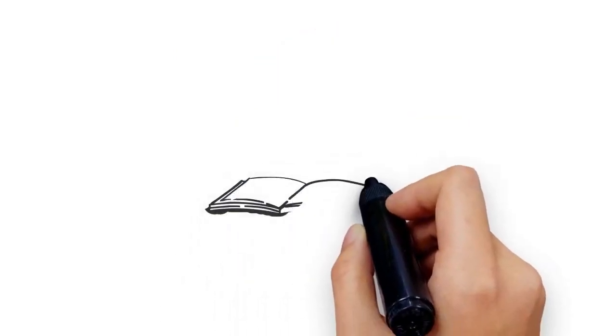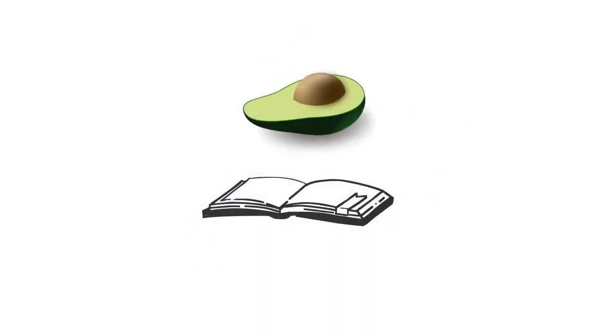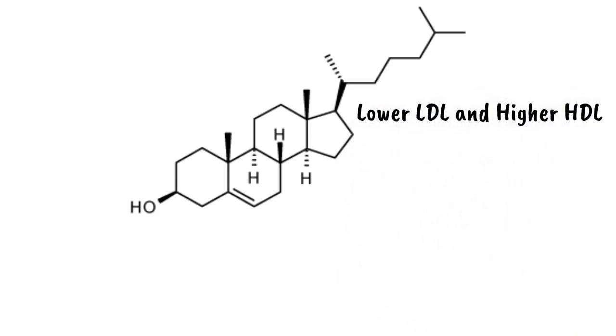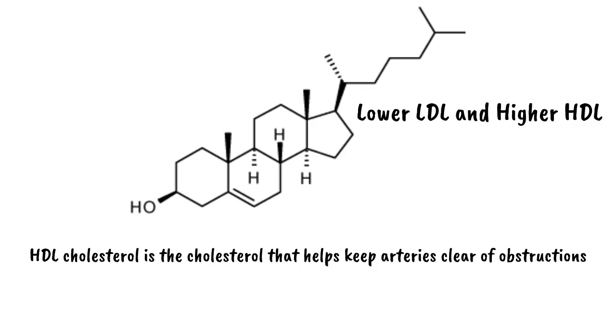One: Avocado. Instead of mayo on your burger or sandwich, switch it up for some avocado. Studies have shown that daily consumption of avocado results in improved blood cholesterol, lower LDL and higher HDL. HDL cholesterol is the cholesterol that keeps arteries clear of obstructions.